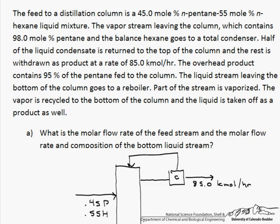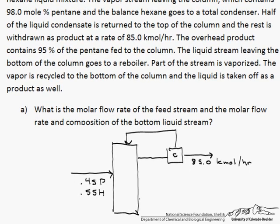The liquid stream leaving the bottom of the column, which is right here, goes to a reboiler. Part of the stream is vaporized and recycled to the bottom of the column, and the liquid is taken off as a product as well.